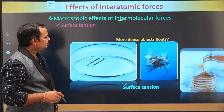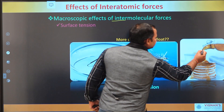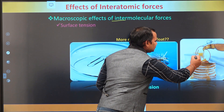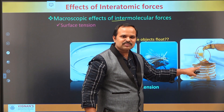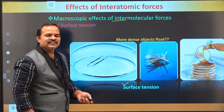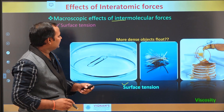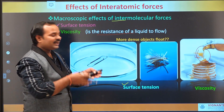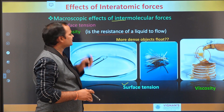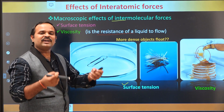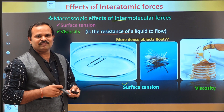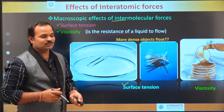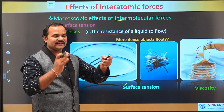Let us see another example. In this case, you can see honey pouring on bread. The honey is not flowing very quickly — it is going very slowly. This property is the viscosity of the liquid, meaning the resistance of the liquid to flow — it opposes the flow of liquid. This is called viscosity. This property also arises because of the interatomic forces between atoms in the liquid. So these two properties arise mostly because of interatomic forces, confirming that interatomic forces really exist in nature.